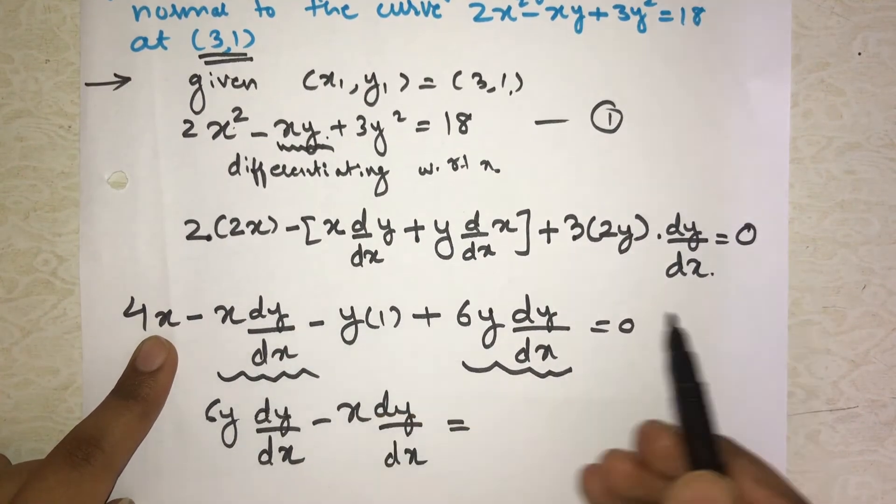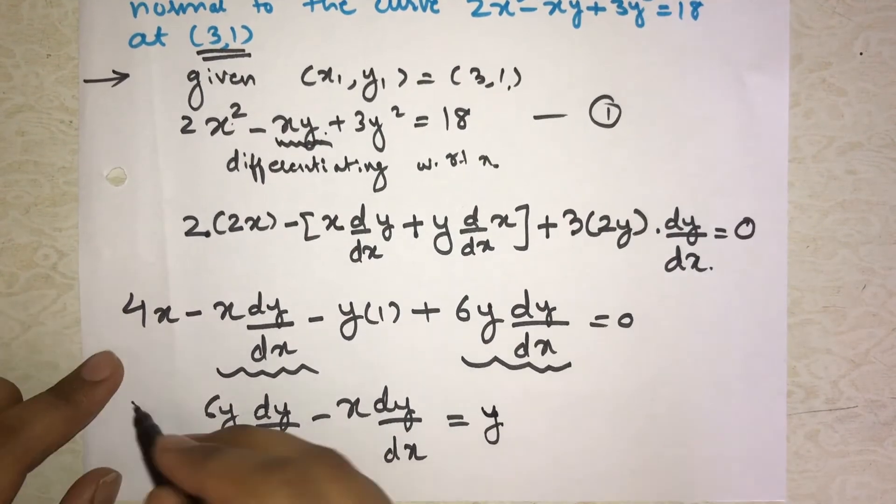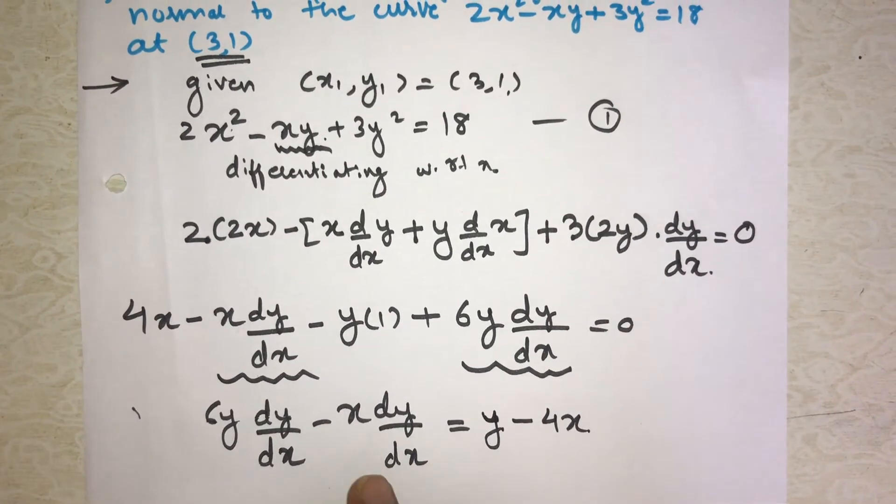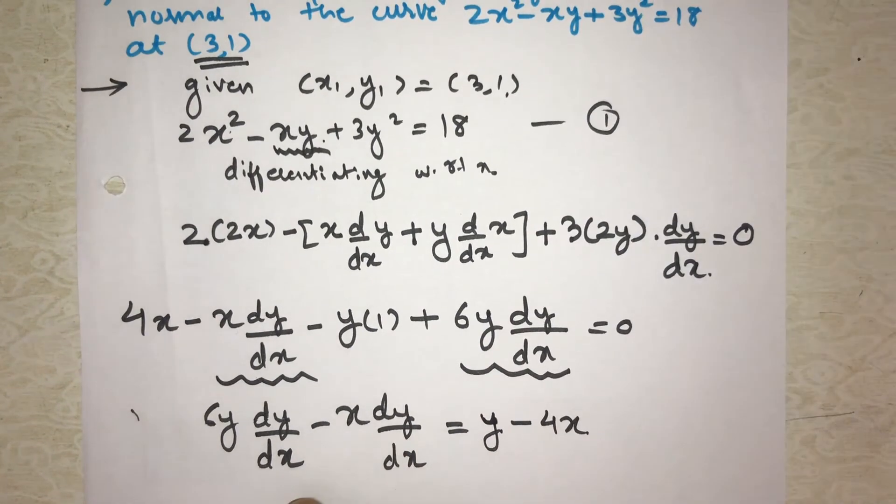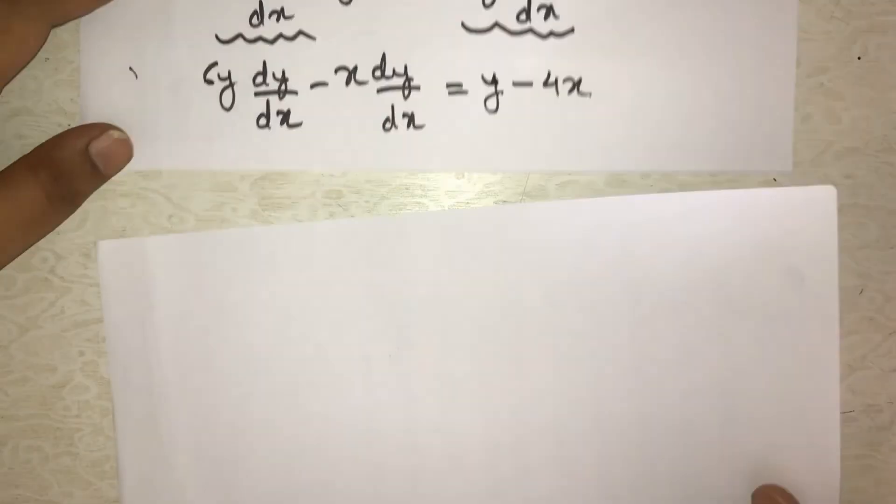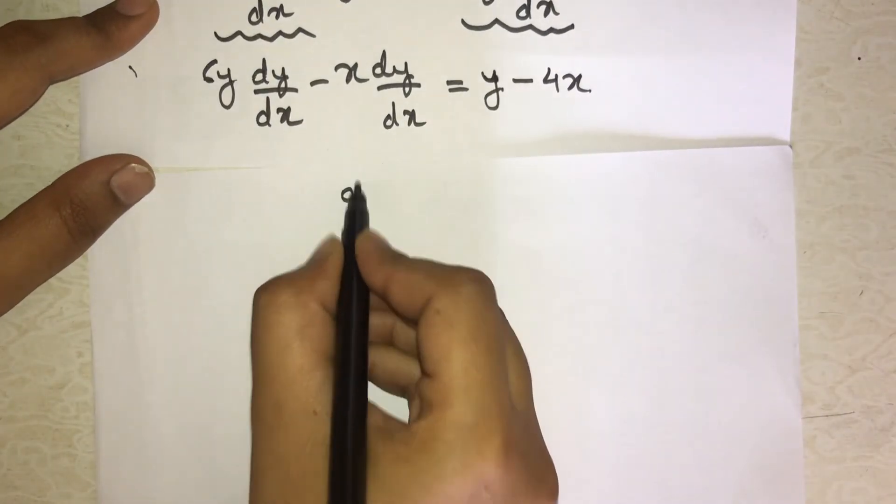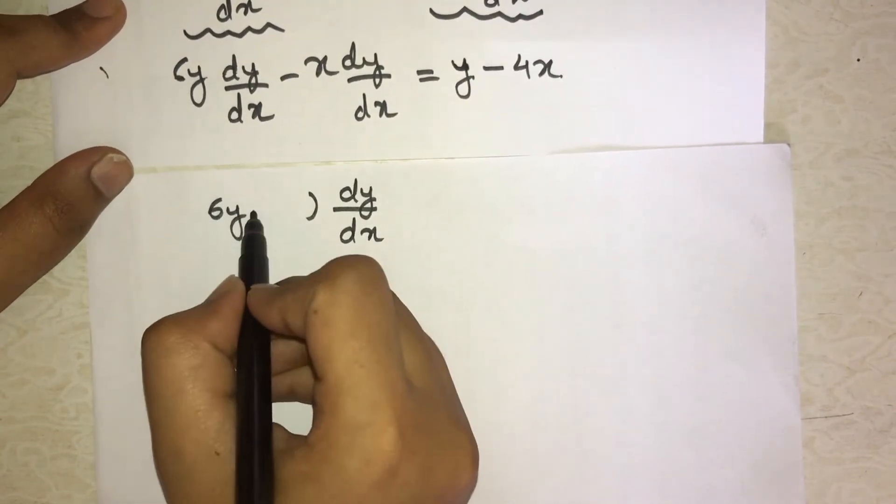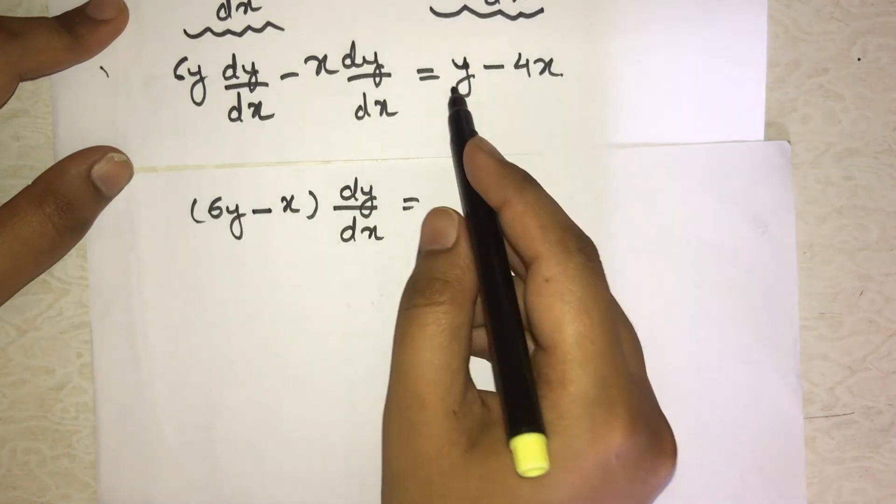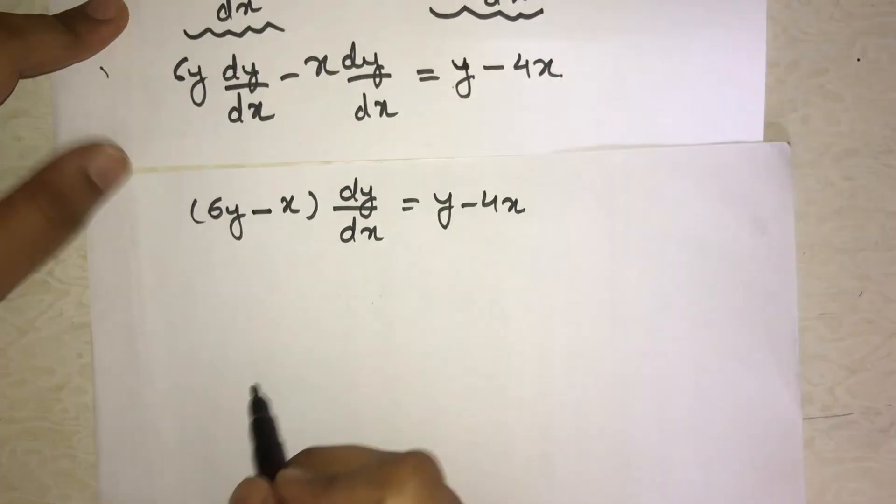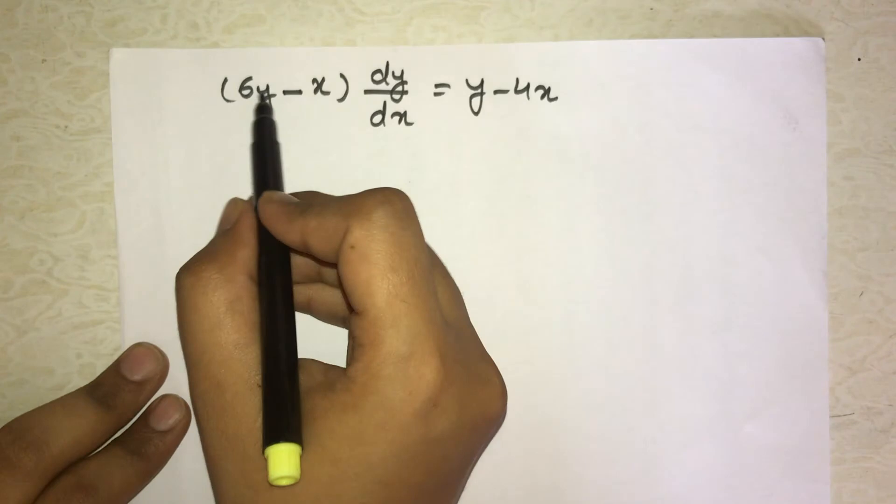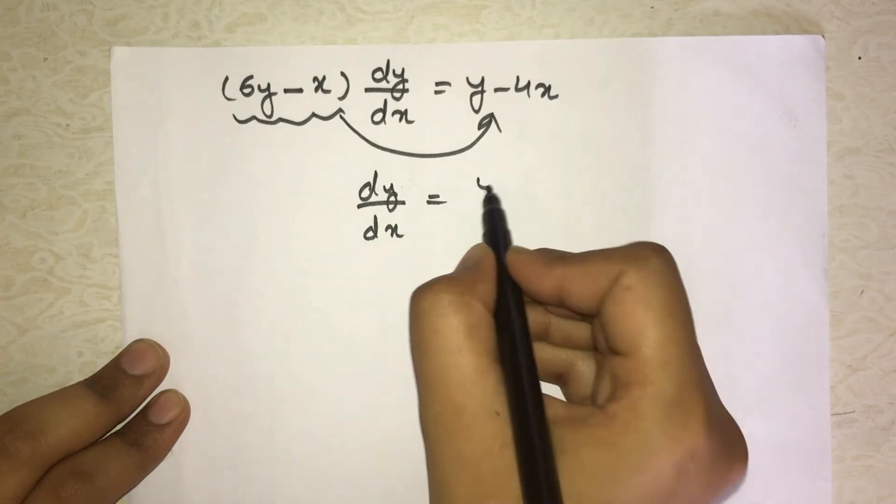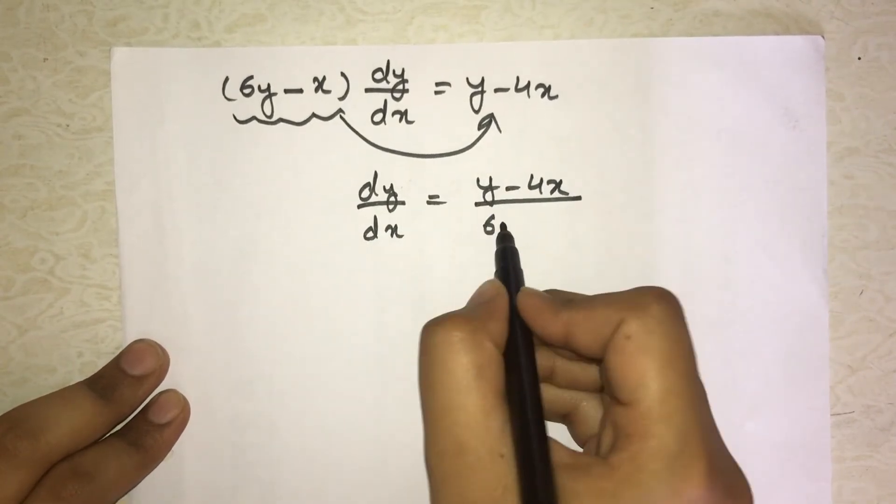This is already on left side, so first I write the positive term: 6y dy/dx. Then I write the minus term: minus x dy/dx equal to. Now all the non dy/dx terms go to right hand side. Which terms? These two. So minus y is here, on right side it will become plus y. Then here plus 4x, so on left side it becomes minus 4x.